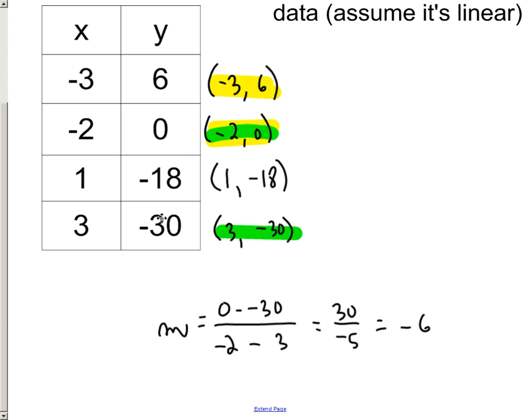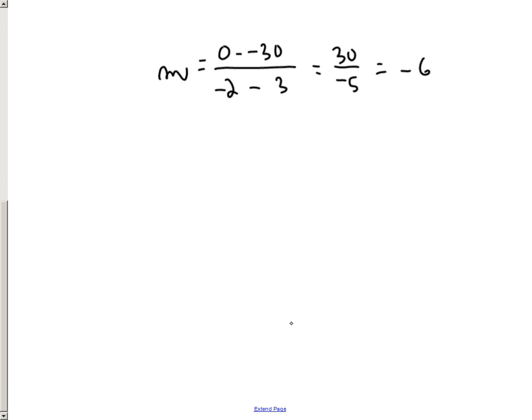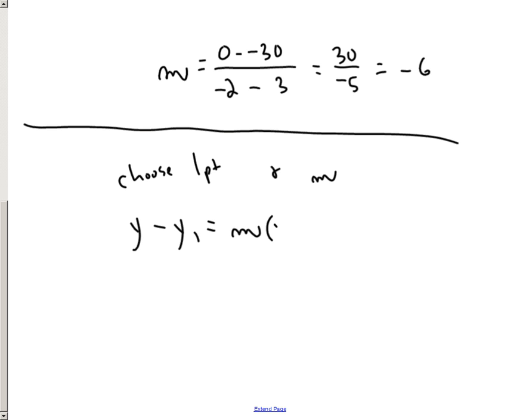So you can choose any two points that you want here. It doesn't matter which two that you choose. And then down here, all you have to do is choose one point and use the M. And use it to plug in Y minus Y1 equals M parentheses X minus X1. This is our point-slope form of the equation. And so now, after we plug that in, we can isolate it and get the Y all by itself, and we'd have a very usable equation that would be the slope-intercept form.